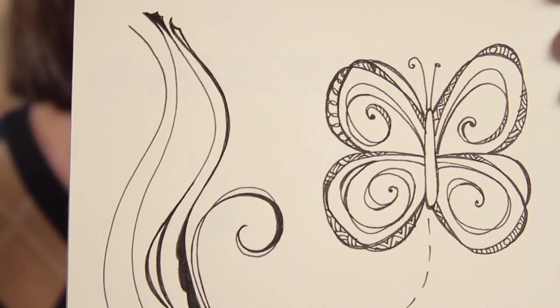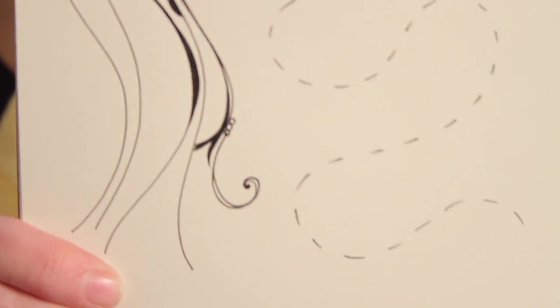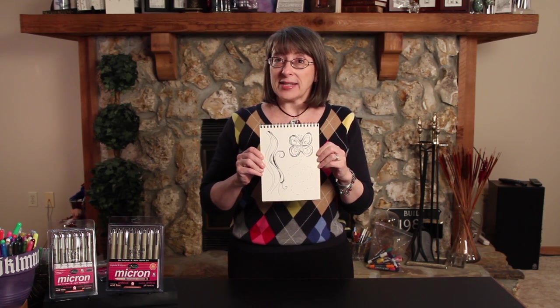We're going to do a butterfly, a sun, and add easy patterns at the edges of the drawings. I'll take you step by step through how to do it. So let's get started.